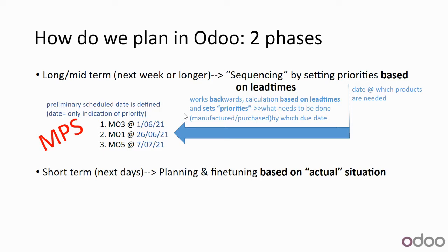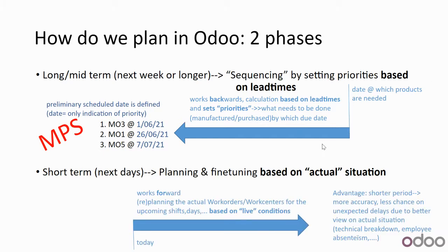In the second phase, the short-term planning, we actually schedule when and on which work center a work order will be produced. A foreman, for example, comes in the morning, reviews the situation for that day or the next, and reschedules if needed — assigning specific people to specific work orders. The advantage of rescheduling on the short term is greater accuracy, since you have a better view of the actual situation including technical breakdowns and employee absenteeism, meaning rescheduling has less impact overall.